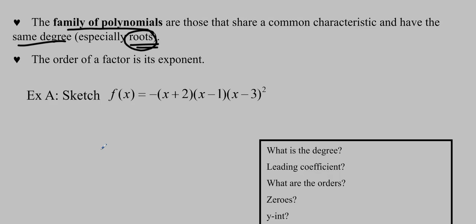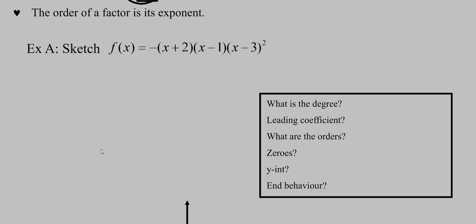We're going to look at how to sketch something in factored form. Previously we used standard form — we used the degree, the leading coefficient, the y-intercept, and the end behaviors. Now we're going to add two things: the zeros and the orders. We'll talk about what the order is in a moment.